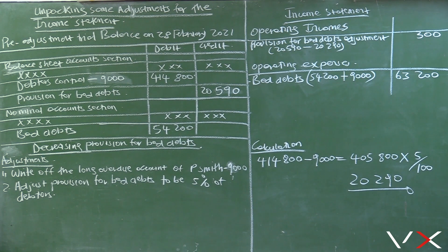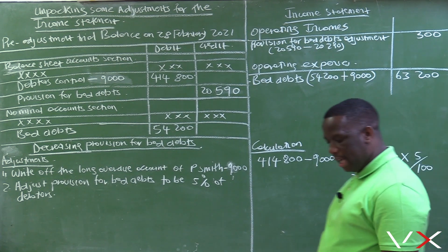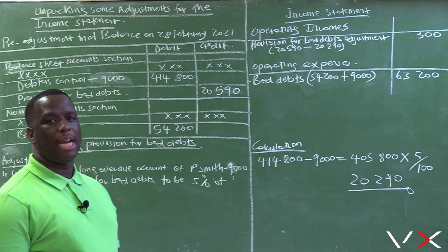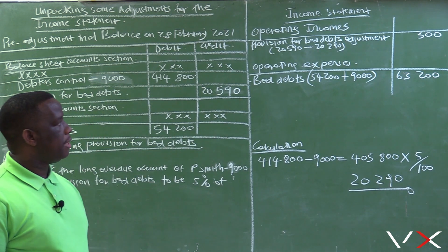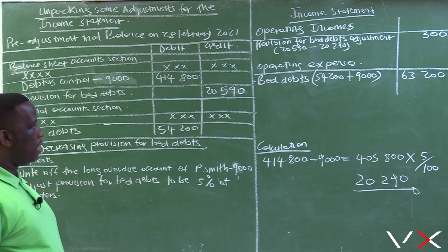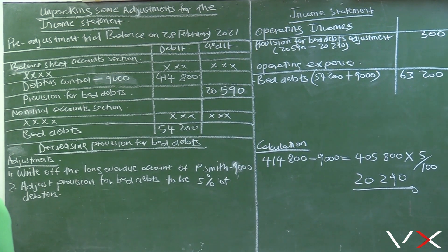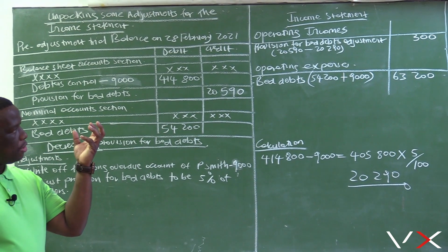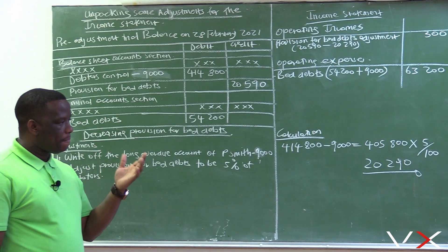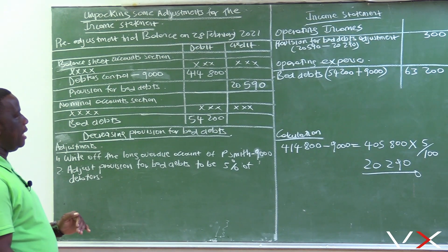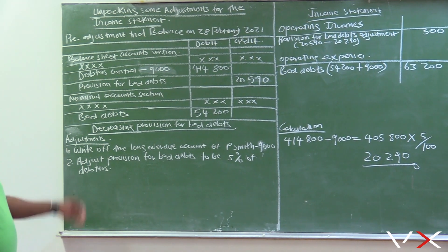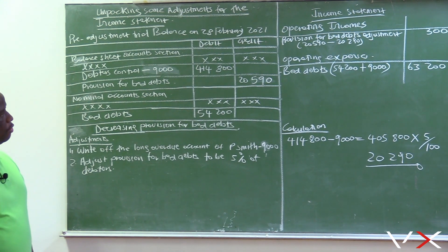This addresses a question commonly asked by students: why does provision for bad debts adjustment appear under operating incomes in some activities and under operating expenses in others? The answer is simple. Provision for bad debts adjustment can either be an increase or a decrease. When you are increasing provision for bad debts, the adjustment is an expense. When you are decreasing provision for bad debts, the adjustment is an income. So increasing appears under operating expenses, and decreasing appears under operating incomes.